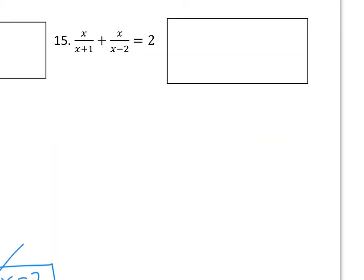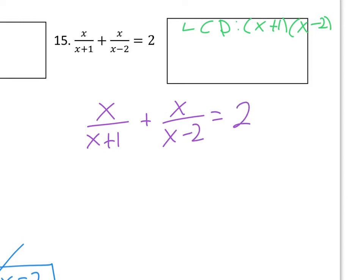Moving on to number 15, same sort of process. We identify what the LCD is. In this case, we don't have any factoring to do, but we do get some variable expressions included in the LCD this time. So the x plus 1 and the x minus 2. One thing I like to do, especially in this case, is figure out what do I have if I just multiply the x plus 1 by x minus 2. We should be coming up with x squared minus x minus 2 for the product of those two binomials.